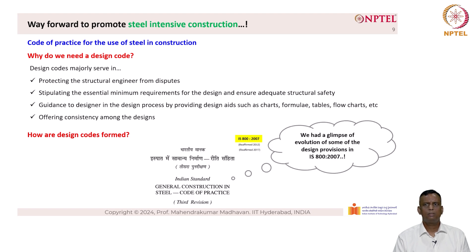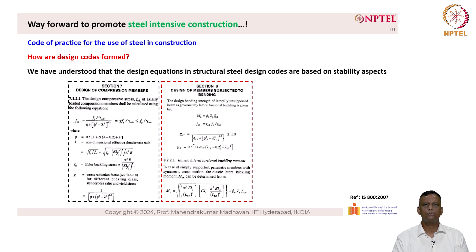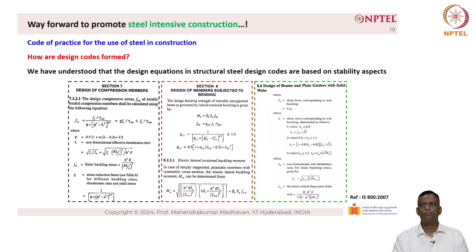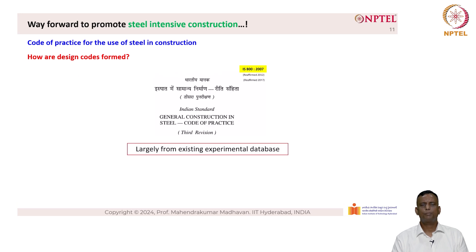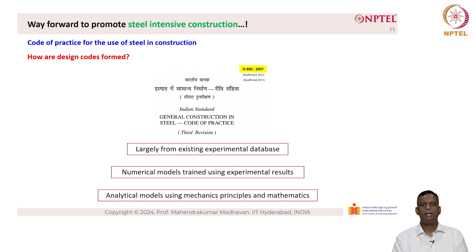How are design codes formed? We have had a glimpse of the evolution of some design provisions in IS 800-2007, and understood that design equations in structural steel design codes are based on stability aspects. In this course, we have covered design of compression members, design of members subjected to bending, and design of plate girders. These codes of practice are largely based on existing experimental databases, numerical models trained using experimental results, and analytical models using mechanics principles and mathematics.